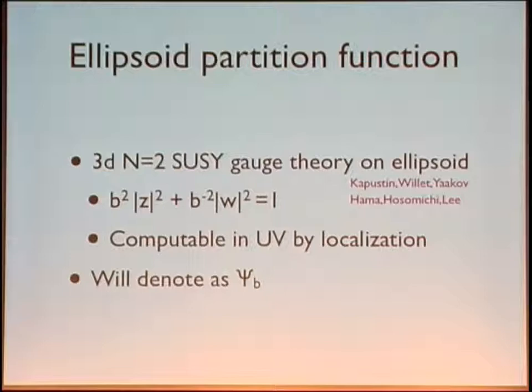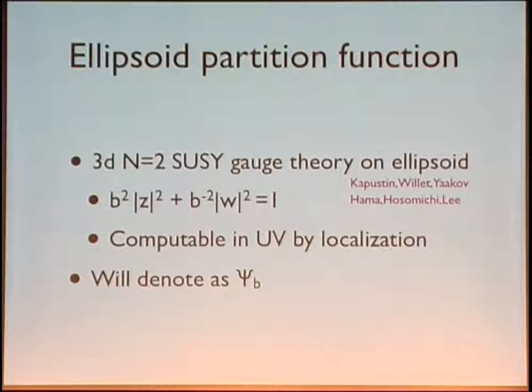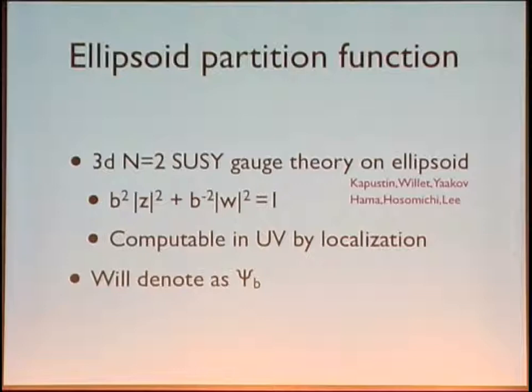Now let's get into more detail about the construction. What do I mean by the ellipsoid partition function? You can do nice partition functions for three-dimensional theories with N=2 supersymmetry on a three-sphere. Inside that you can actually deform this compactification — this was done by Hama, Hosomichi, and Lee — and put it on an ellipsoid. The sphere would be something like |z|² + |w|² = 1, while the ellipsoid is the deformation of the metric which preserves the U(1)×U(1) isometries used in localization. It's still computable by localization, but it has an extra parameter, so it's more fun.